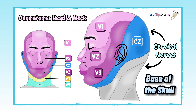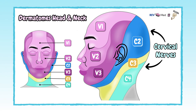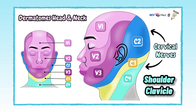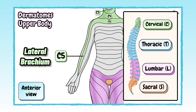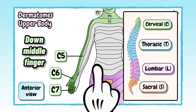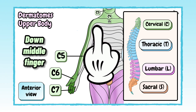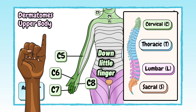C2: occipital/skull. C3: neck, cervical. C4: shoulder, clavicle. C5: lateral brachium. C6: down to the thumb. C7: down to the middle finger. C8: down to the little finger.